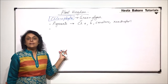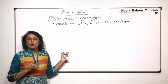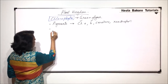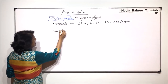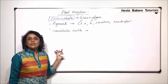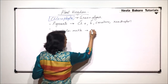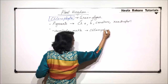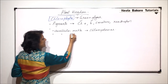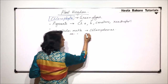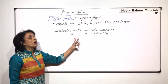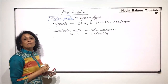Chlorophyta — these green algae — show a wide variety in form and shape. If we talk of unicellular motile, that means the green algae is just one cell and it can move; the example is Chlamydomonas. Then we can have unicellular but non-motile green algae; the example is Chlorella.